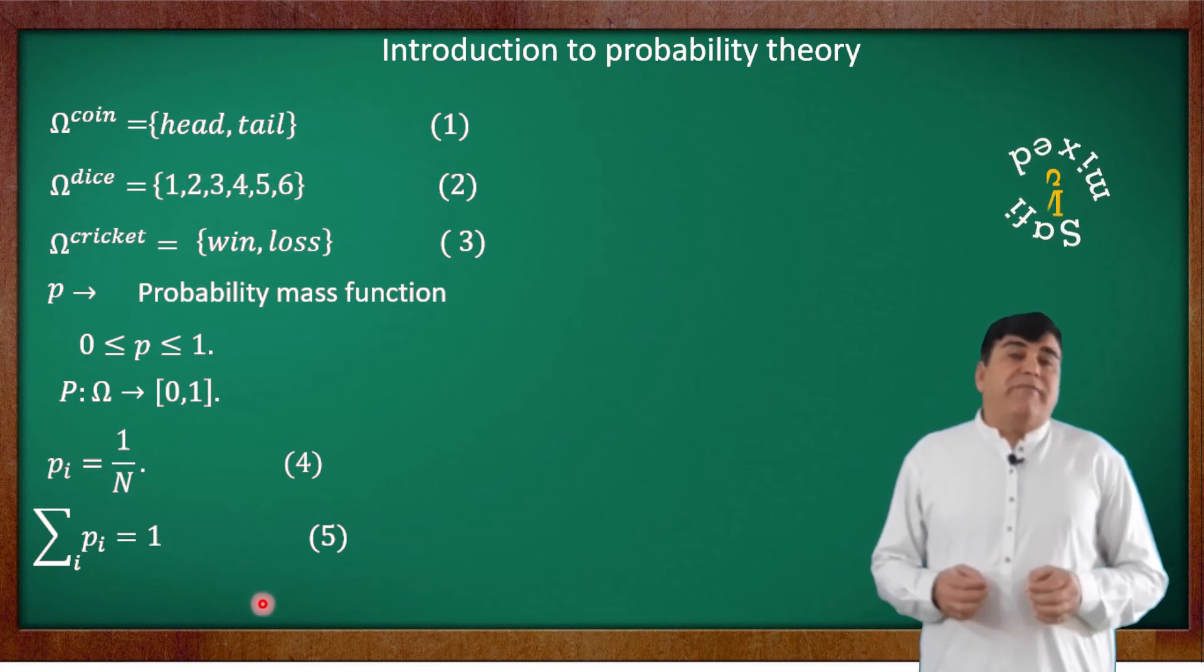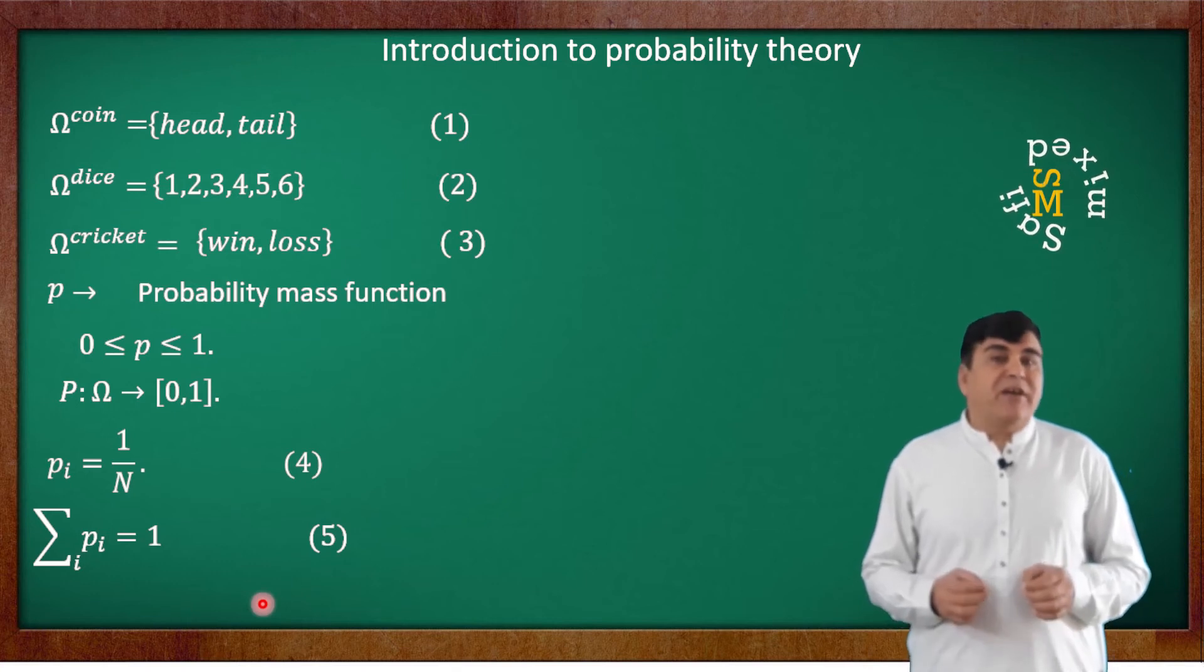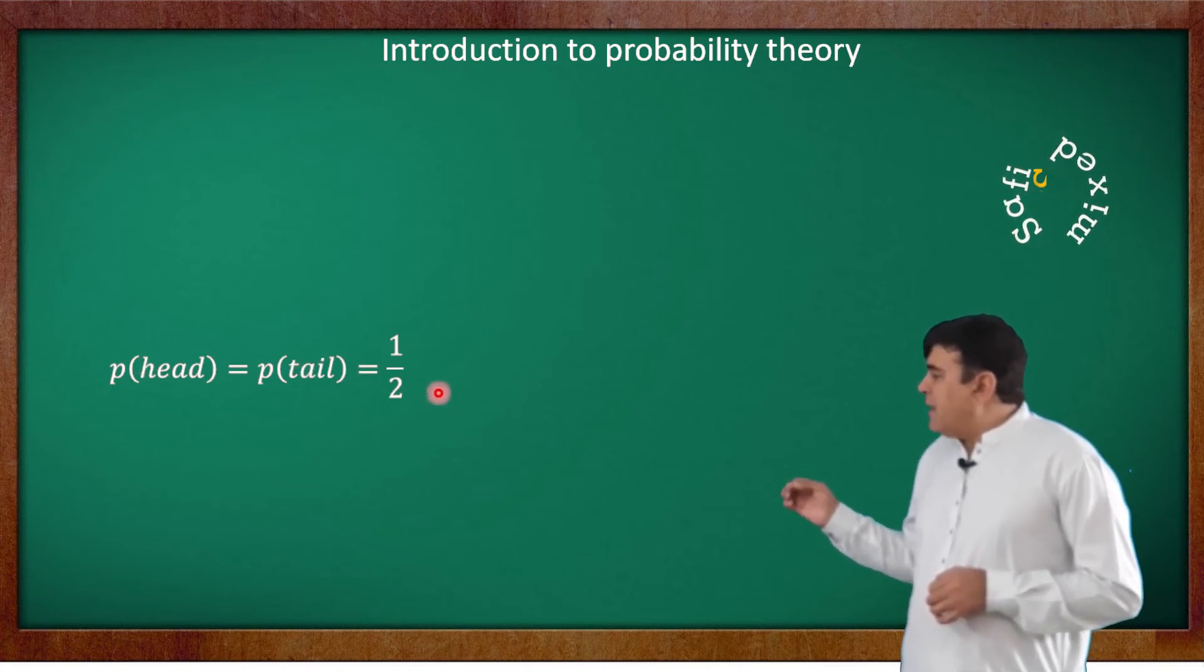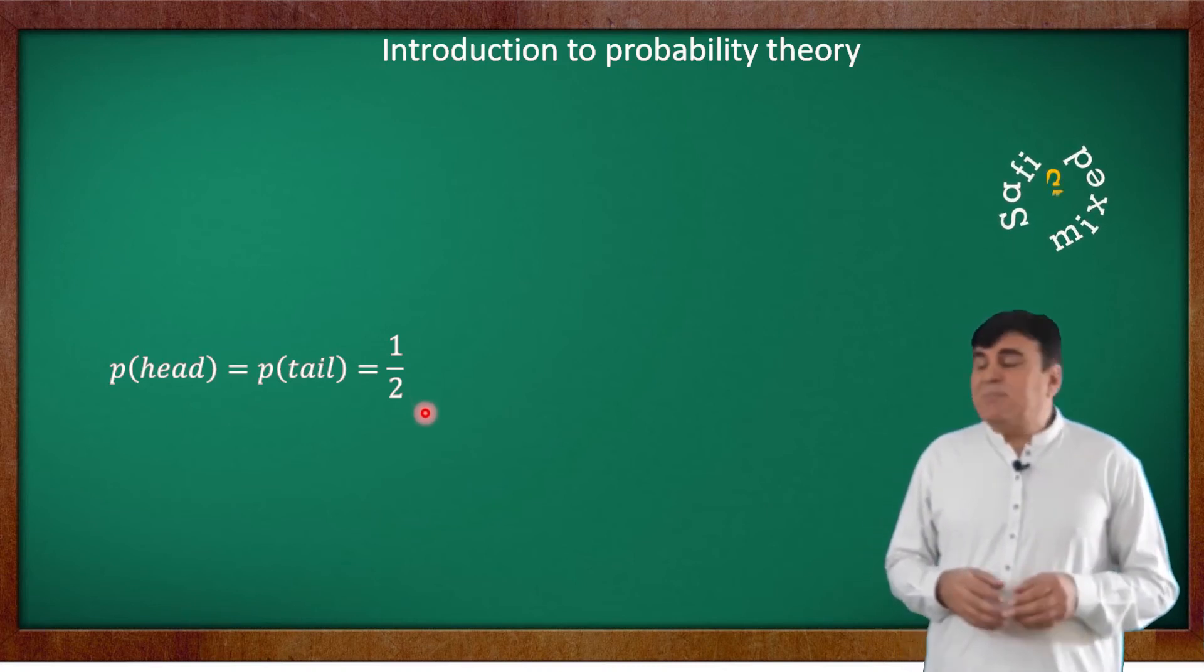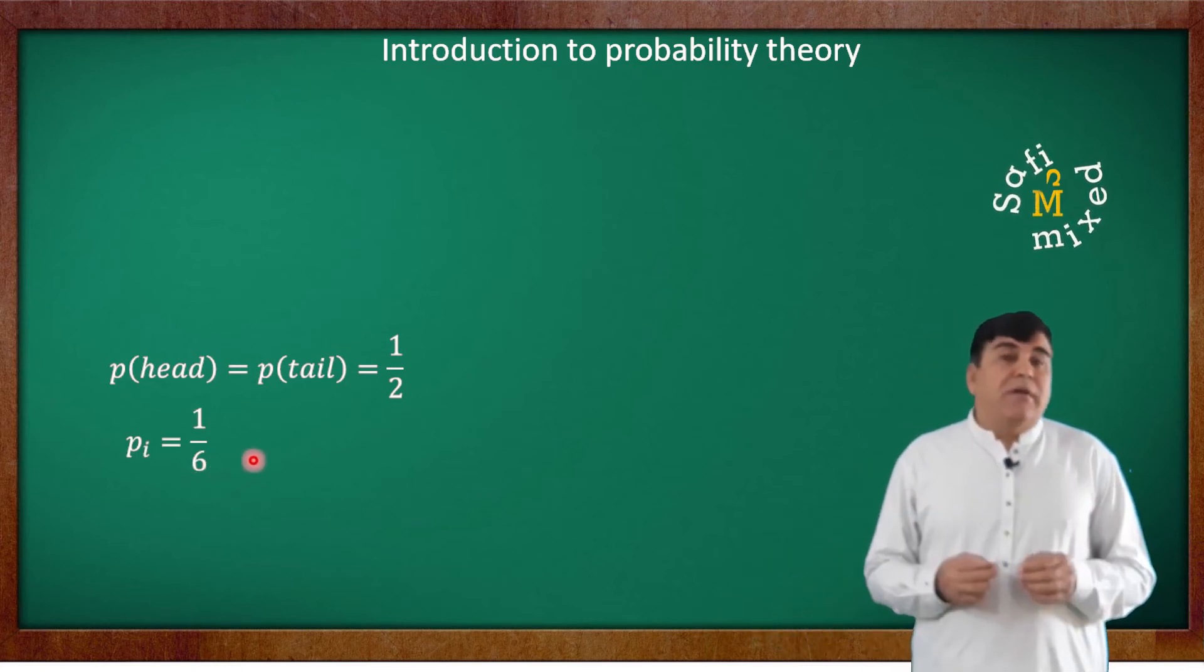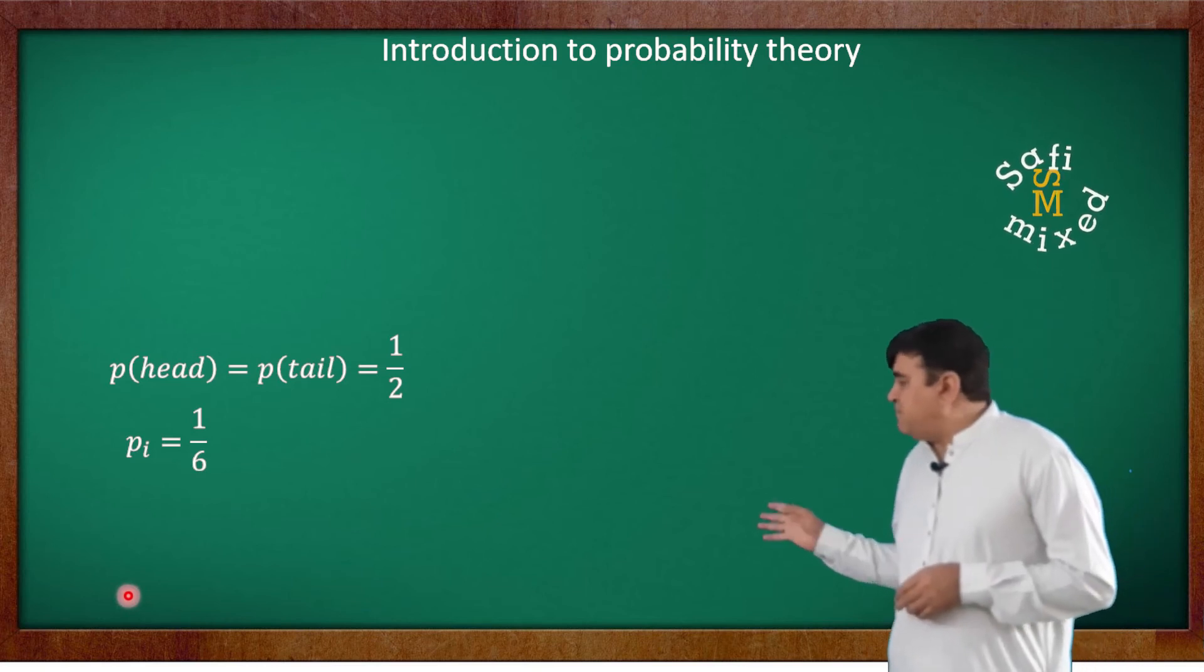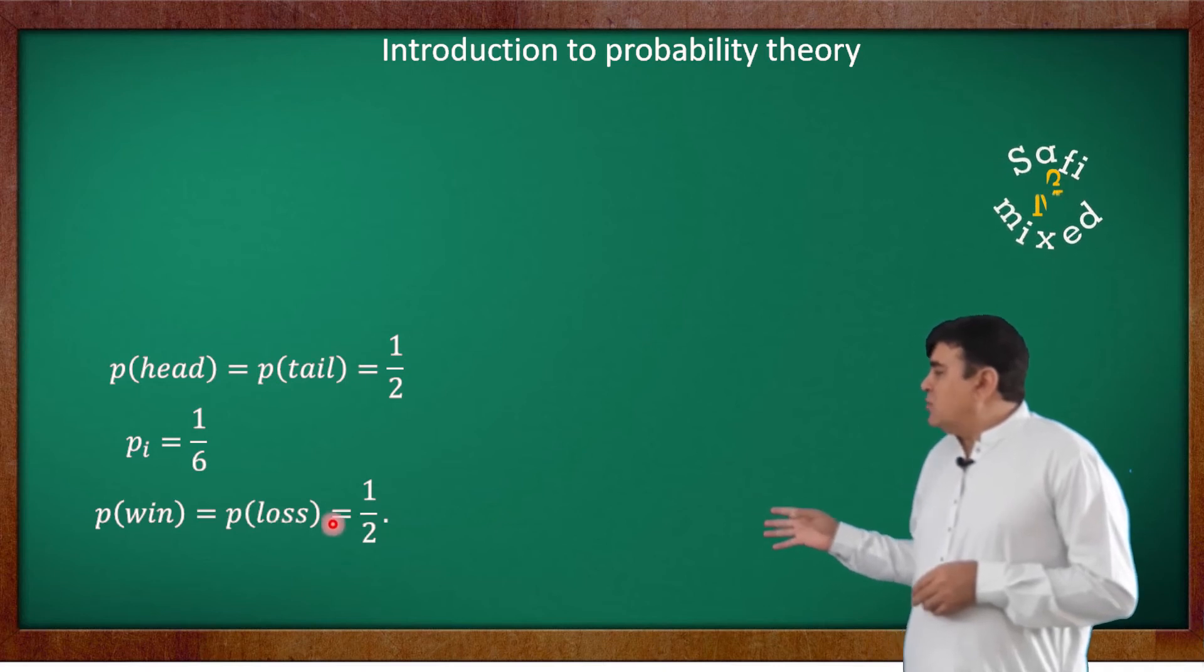Thus, in the light of equation 4, the probability for each outcome in tossing of a fair coin is P_tail = P_head = 1/2. And for a dice, the probability of each face becomes P_i = 1/6. And under fair condition, the probability of win and loss for a team in a cricket match can be expressed as P_win = P_loss = 1/2.